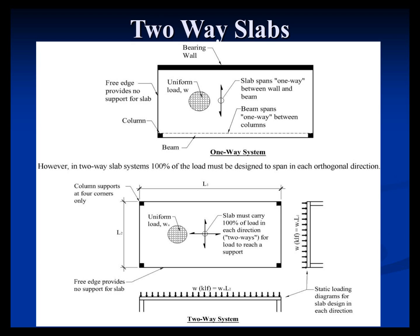The slide here shows a general two-way slab layout — nothing specific to post-tensioning. In a one-way system, the slab goes in one direction and is supported either directly on a bearing wall or a beam takes it left to right — you're only designing one direction. In a two-way system, as you can see here, the slab needs to be designed in both directions to carry load to the vertical support provided by the columns. So instead of a one-way slab plus beam analysis, you're replacing the beam with an additional slab design to maintain vertical load-carrying capacity in both directions.